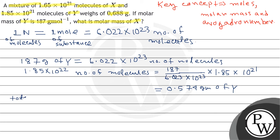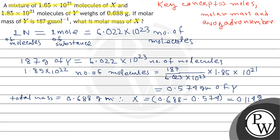अब जो total mass है वो कितना दिया गया है — 0.688 gram। Therefore, जो हमारा X आ जाएगा: mass of X equals 0.688 minus 0.574 equals 0.114 gram। तो यहाँ पर जो 1.65×10²¹ number of molecules का weight है वो 0.114 gram है।